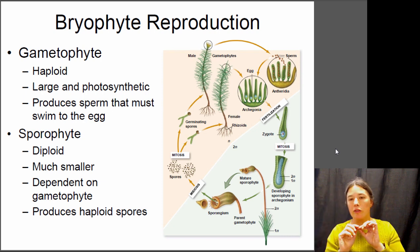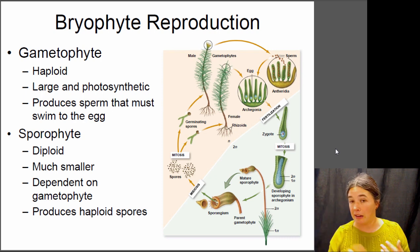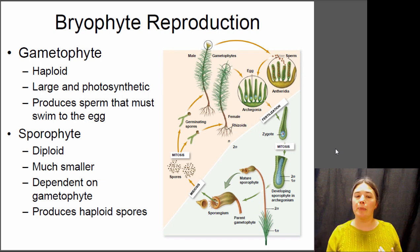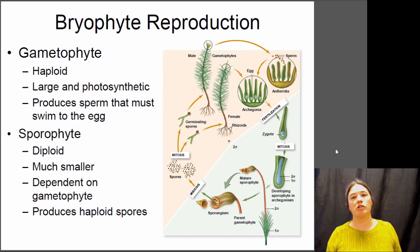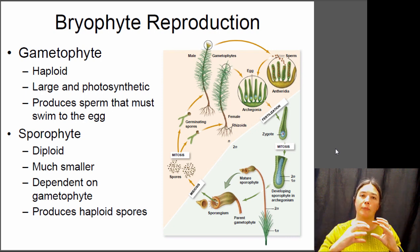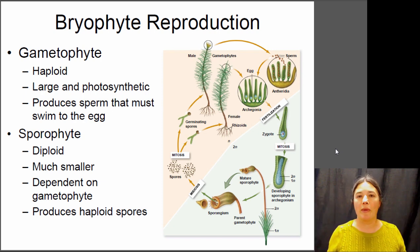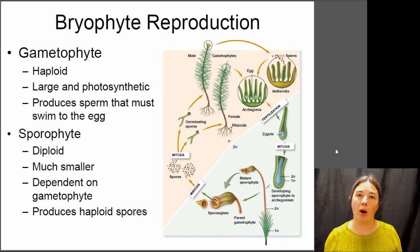The egg remains in the archegonia, the sperm swims in and fertilizes the egg, and then the sporophyte grows from there — out of the top of the gametophyte. It looks almost like a little flower; it's actually a small brown structure that grows up out of the top. That diploid sporophyte is completely dependent upon the gametophyte — it's not photosynthetic and can't survive on its own. The sporophyte produces spores in its sporangia; those haploid spores are released and settle on the ground, germinating into new male and female gametophytes. That's the alternation of generations in mosses.